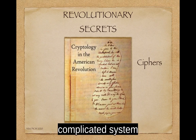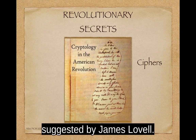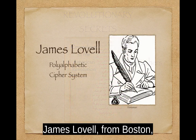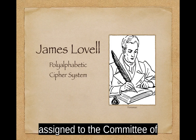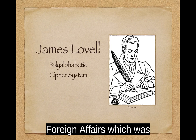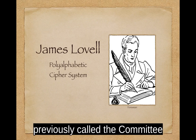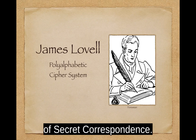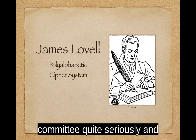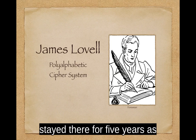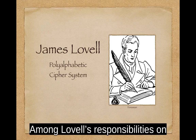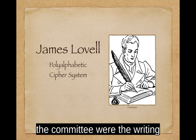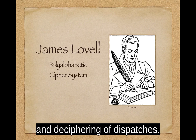Now we'll move on to a more complicated system suggested by James Lovell. James Lovell, from Boston, was elected to the Continental Congress. Shortly thereafter, he was assigned to the Committee of Foreign Affairs, which was previously called the Committee of Secret Correspondence. He took his assignment to the Committee quite seriously and stayed there for five years as other members came and went. Among Lovell's responsibilities on the Committee were the writing and deciphering of dispatches.